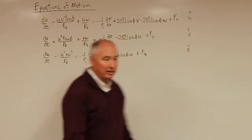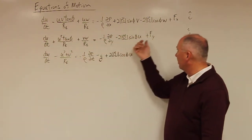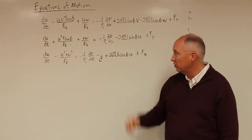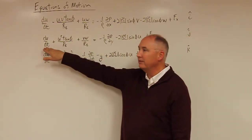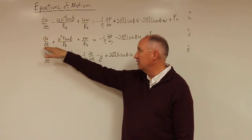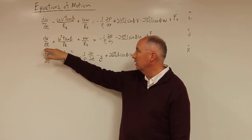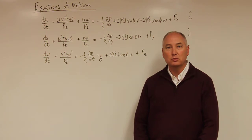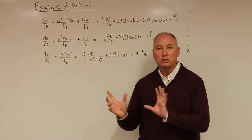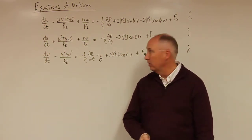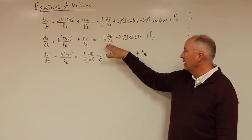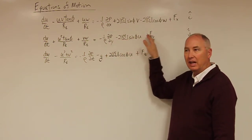We also have the equation for the north-south motion. And once again, it's a total derivative of the v component of the wind with respect to time, plus two of the terms which are responsible for the rotation of the coordinate system itself. We have the pressure gradient force, we have the Coriolis force, and we have friction.